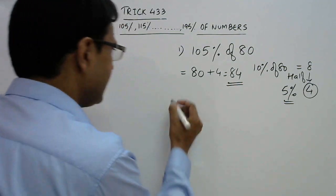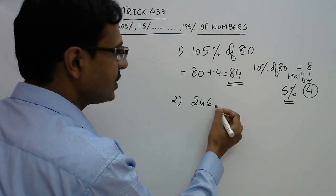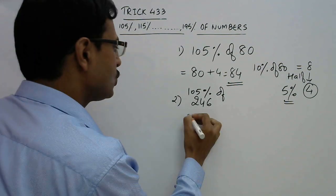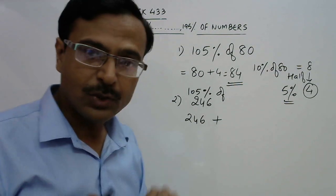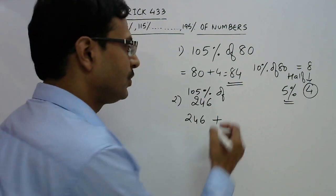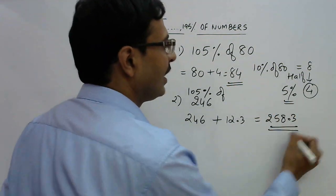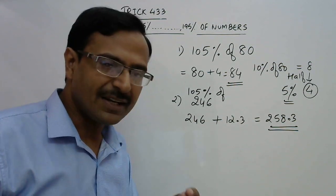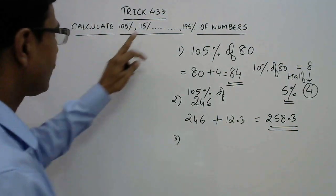Let's try 105% of 246. The original number 246 represents 100%. 10% of 246 is 24.6, and half of that is 12.3, which is 5%. Adding 246 and 12.3 gives 258.3 as the answer. Just a little bit of practice and you'll master this method. Now let's take 115%.